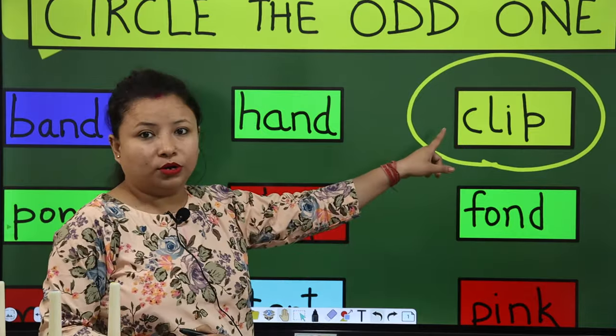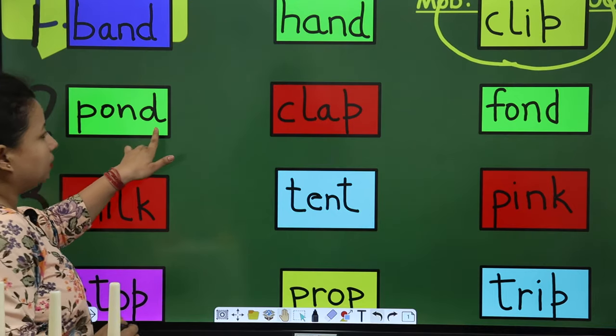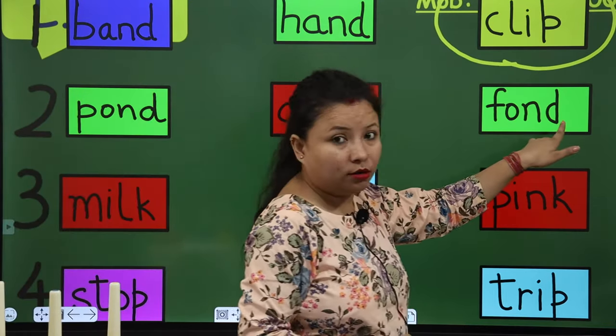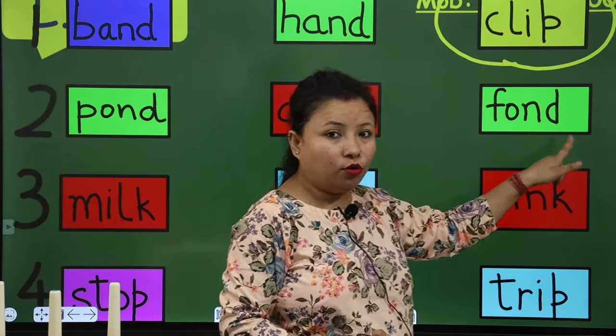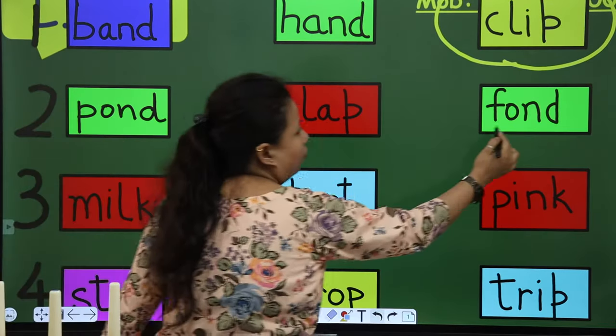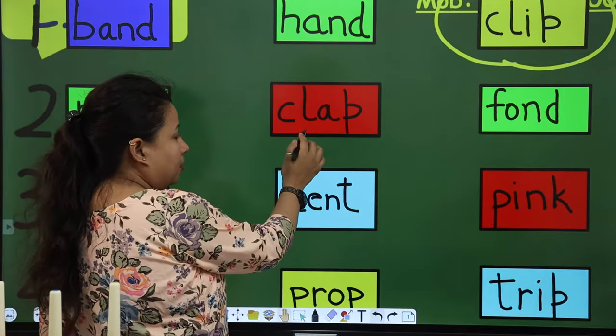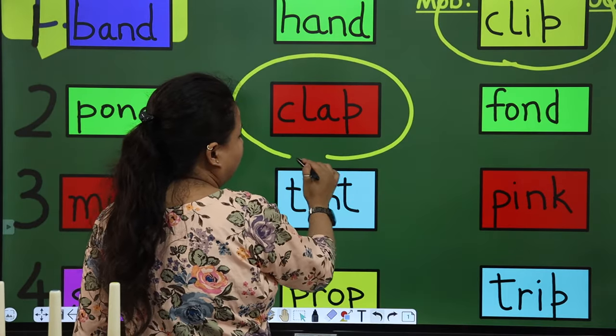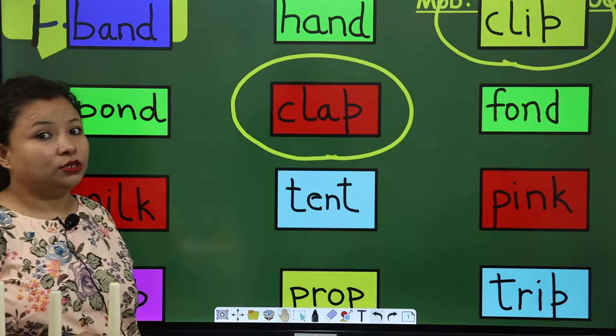Now next is pond, clap and fond. Pond, clap and fond. So pond, fond, both have same rhyming word. And clap. Clap is different from others. So we have to make a circle on it like this. Okay. So this is the odd one.